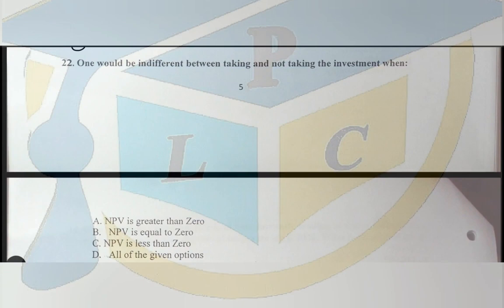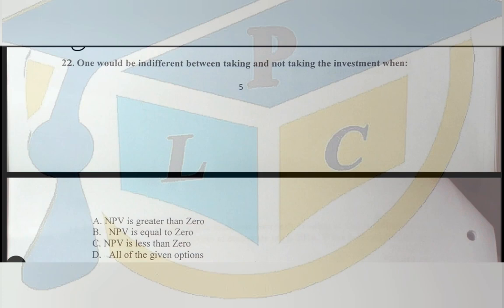Question 22: one will be indifferent between taking and not taking the investment when: A) the net present value is greater than zero, B) the net present value is equal to zero, C) the net present value is less than zero, or D) all of the above. This question is talking about two sides of the coin — those who may accept or not accept an investment based on the NPV decision rule.